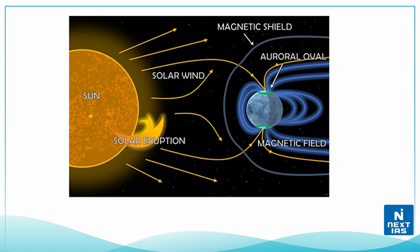These charged particles interact with different gases and cause a display of light, which are called auroras. The Earth's geomagnetic field shields humans from these harmful particles. At Earth's high-latitude regions, generally called the auroral oval, the particles continuously stream down.